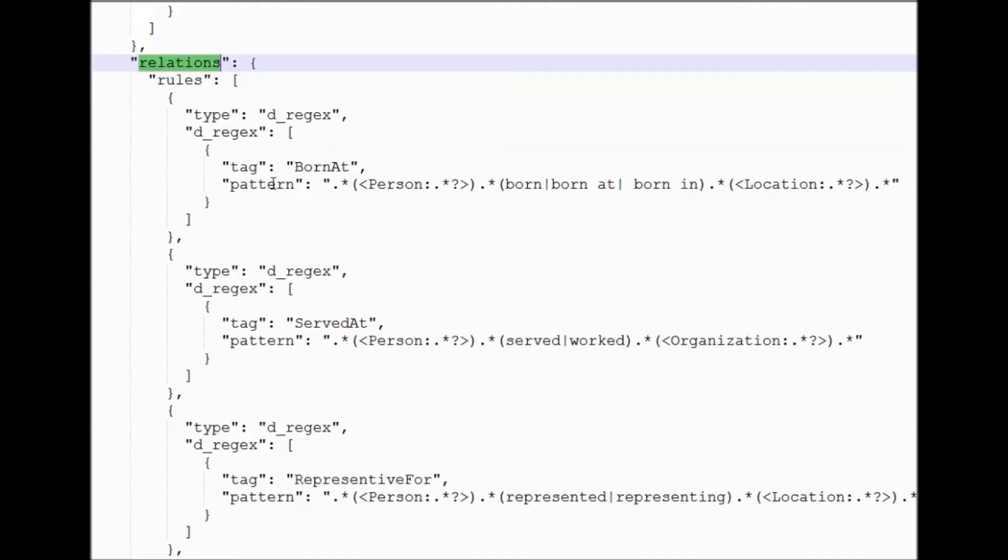For the born at relationship the regular expression pattern that is specified is if a person is followed by born or born at or born in and then it's followed by a location then we infer it's a born at relationship between the person and the location.